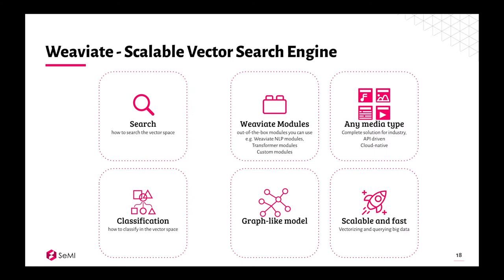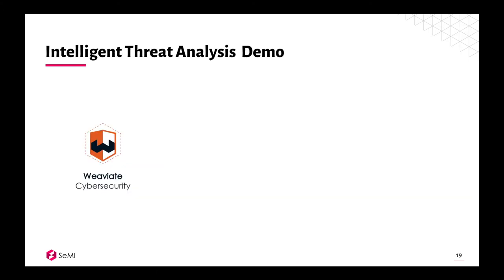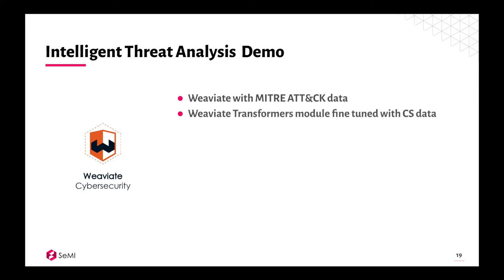When it comes to the cybersecurity vertical, we mostly focus on Intelligent Threat Analysis, meaning Weaviate focuses on structured data — descriptions, text documents, and those kinds of things related to threat analysis. For this demo, we're using the MITRE ATT&CK framework, because it contains a lot of graph relations but also a lot of unstructured data. We use a Weaviate transformers module fine-tuned with cybersecurity data — in this case, sentence-BERT.